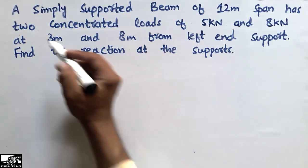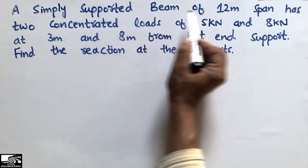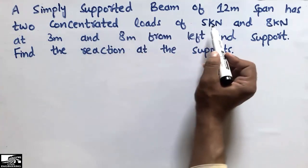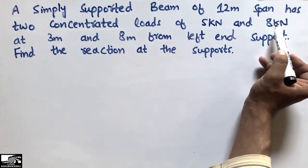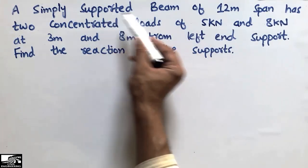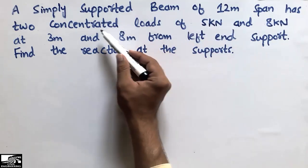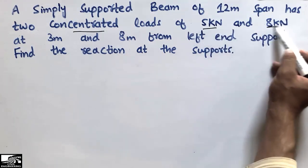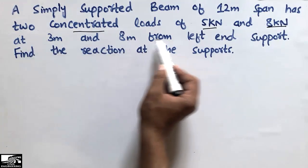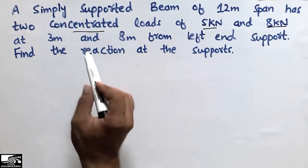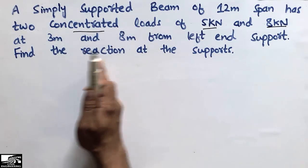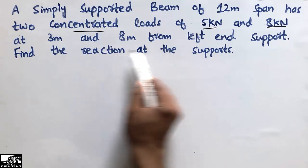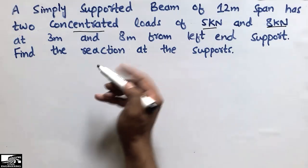The problem states that a simply supported beam of length 12 meters has two concentrated loads of 5 kN and 8 kN. The loads are acting at 3 meters and 8 meters from the left end support, and we need to find the reactions at the supports.